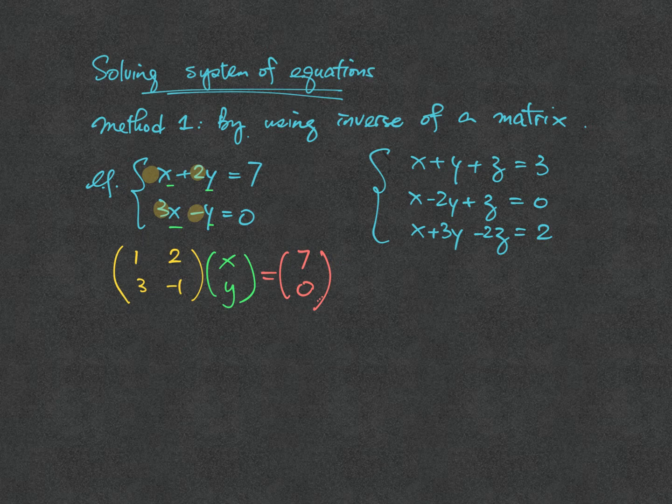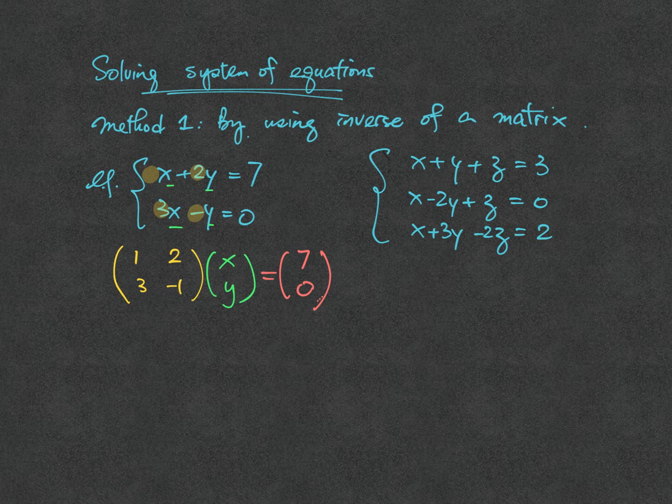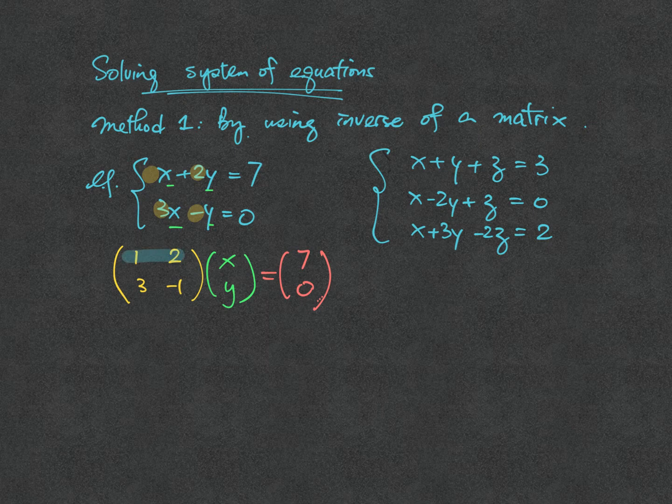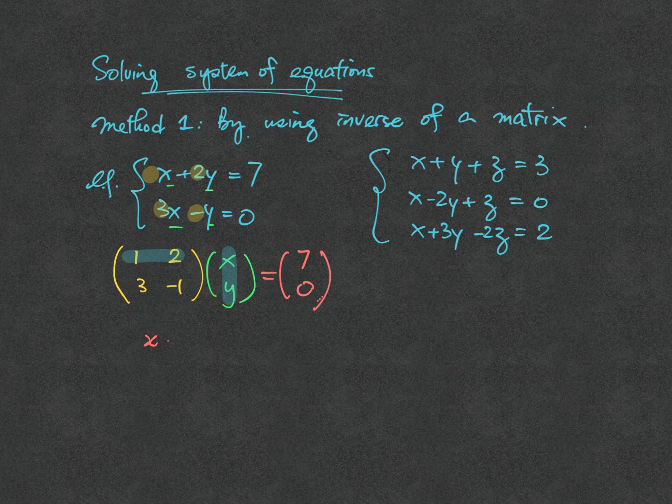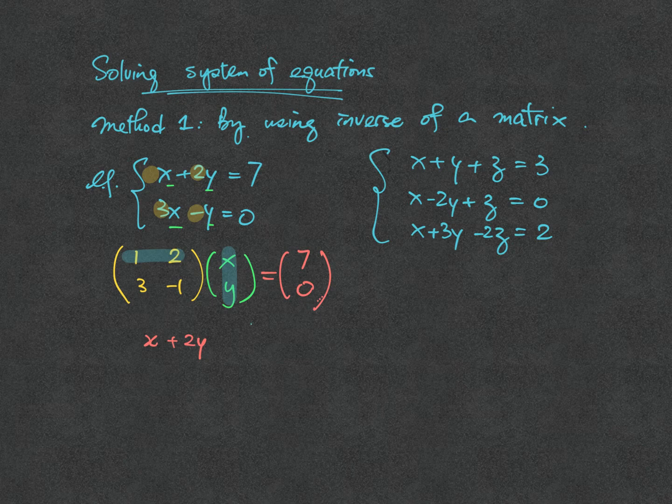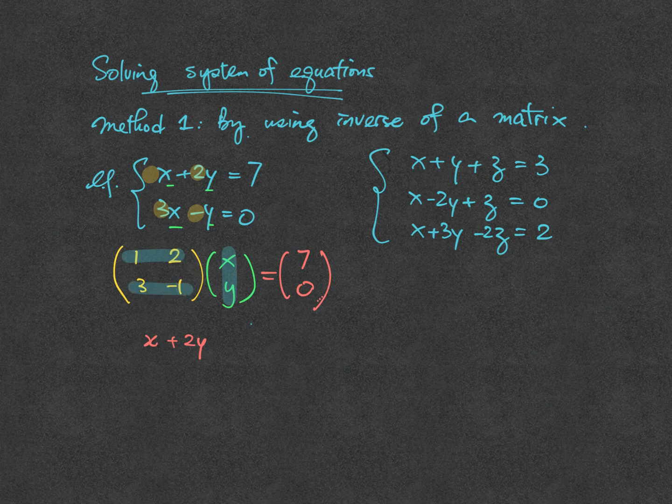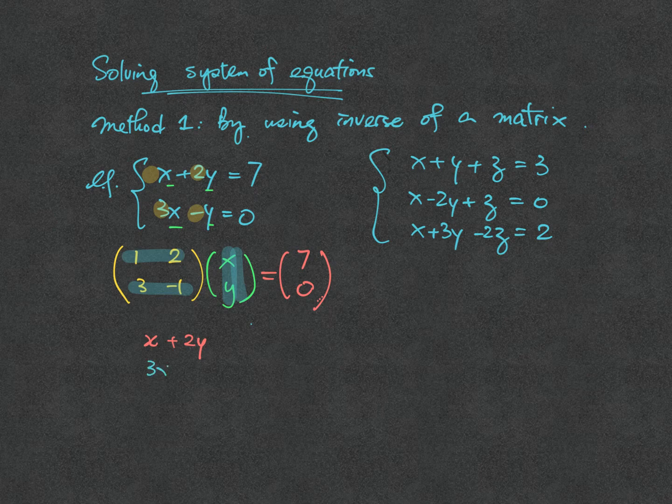If you can't follow it quite well, then you can try to break down the matrix by multiplication. So you multiply the first row and the column matrix, which gives you x plus 2y. While for the second one, you also multiply it as 3, minus 1 multiplied to x, y, which gives you 3x minus y.